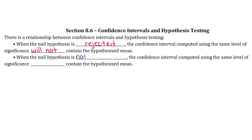Vice versa: when the null hypothesis is not rejected, the corresponding confidence interval will contain the hypothesized mean. That's basically the only new things you need to know for this section. Let's do a couple of examples.